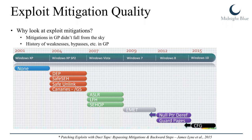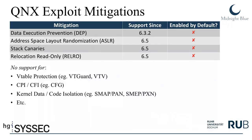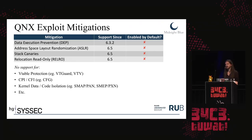Why take a look at exploit mitigations? Because the mitigations we're used to in the general-purpose world — Windows, Linux — didn't come falling from the sky, especially not in their current form. There's a long history of weaknesses, bypasses, and subsequent improvements. Since there's nothing like that for QNX, it's very fruitful ground for finding interesting issues, which is why we took a look at it. As of QNX 6.5, there is support for data execution prevention, address space layout randomization, stack canaries, and relocation read-only — but don't get too excited, because these are not enabled by default. You also shouldn't expect advanced mitigations like vtable protections, control flow integrity, or kernel code and data isolation.